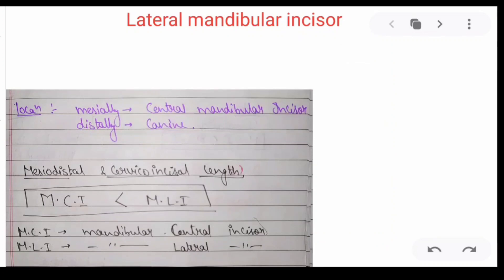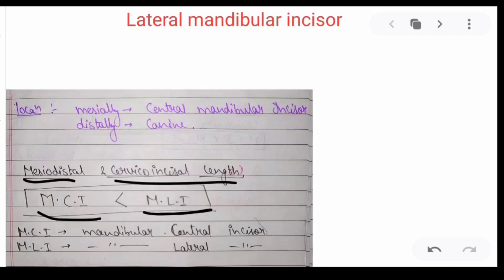If we compare the mesodistal and cervical incisor length, we can say that the mandibular central incisor has less mesodistal and cervical incisor length than the mandibular lateral incisors. Throughout the video we denote MCI as the mandibular central incisor and MLI as the mandibular lateral incisor.